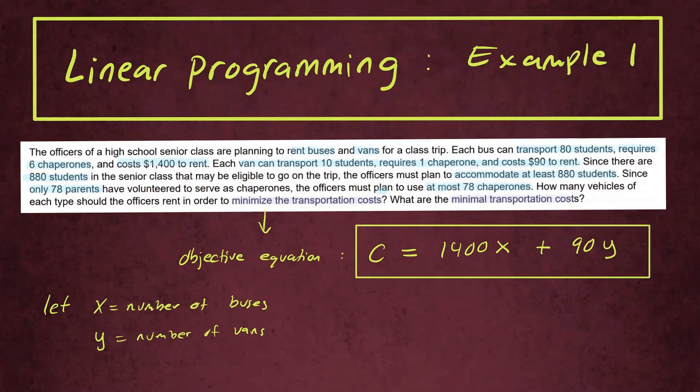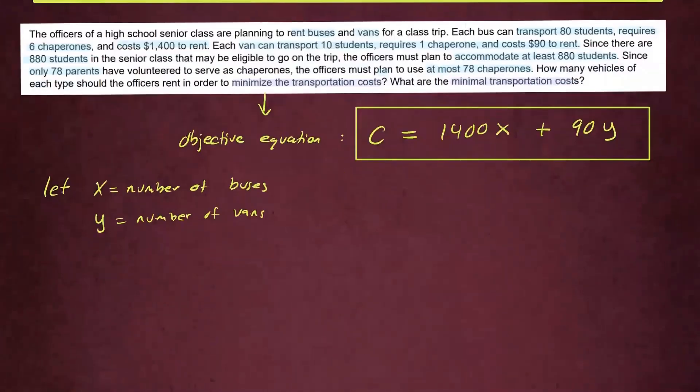That's the function we want to minimize. Now let's see what are the constraints for this scenario. So now we're going to set up our inequalities for these two variables. The conditions are each bus can transport 80 students. So for the bus, we can have 80 number of students. And the van can transport 10 students, so that will be 10Y.